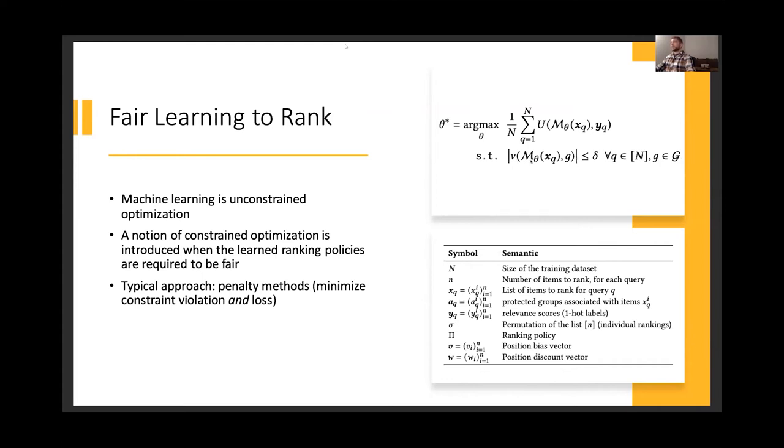This is much harder than normal learning to rank because again you have constraints on the outputs of your model, and so typically that's not something that you're able to do in machine learning is to enforce requirements on the outputs along with maximizing the given loss function. In this case, the utility.